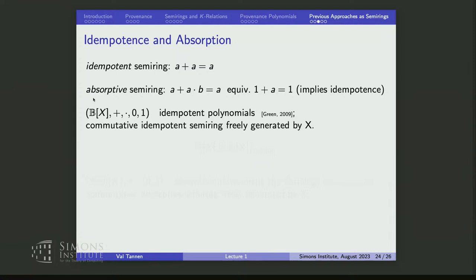The semiring of idempotent polynomials has boolean coefficients instead of natural numbers — no coefficients, since those with coefficient 0 are just not written down. This is the commutative idempotent semiring freely generated by X. The literature uses 'idempotent semiring' to mean plus is idempotent, and 'commutative semiring' to mean times is commutative — I'm just following tradition.